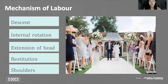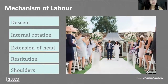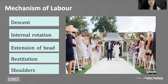After external rotation comes delivery of the shoulders — the anterior shoulder first, then the posterior shoulder. A helpful analogy: engagement happens, you descend down the aisle, internally rotate to look toward your spouse, extend your head up for a kiss, then restitution occurs with external rotation as you turn away and head back down the aisle. This makes memorizing the sequence of steps in the mechanism of labor much easier.